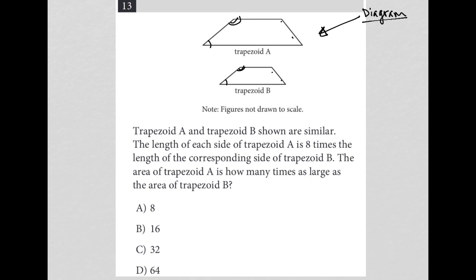So let's think about what that means. It literally means that every single side, in essence, it literally means trapezoid A. So A is equal to eight times B in every way. It's eight times bigger than B. So the last sentence here says the area of trapezoid A is how many times as large as the area of trapezoid B.